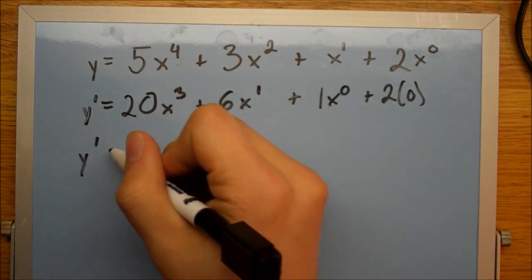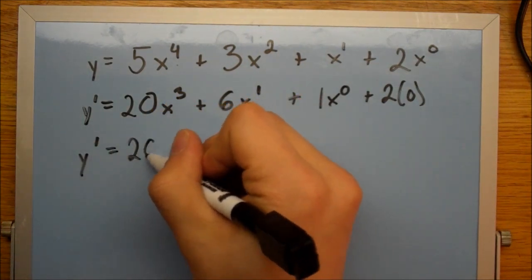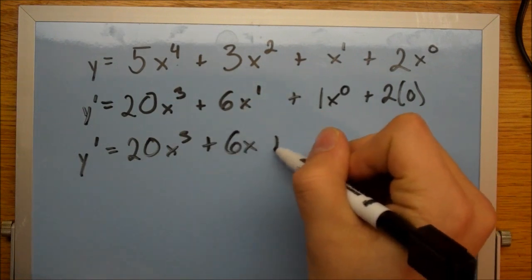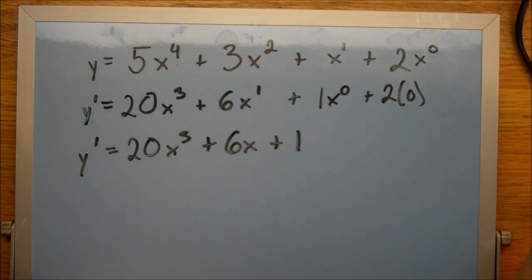So our final answer here is going to be 20x cubed plus 6x plus 1. And that's how you take a derivative of a simple equation.